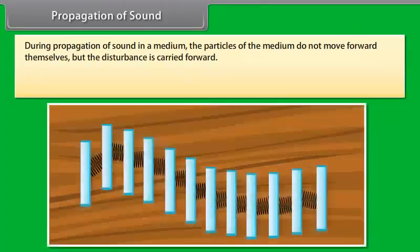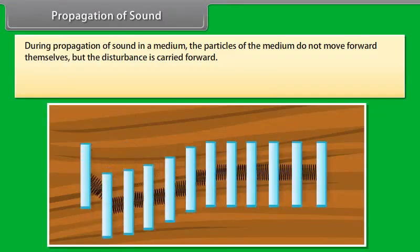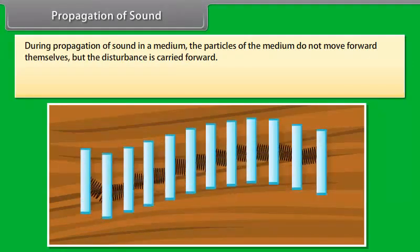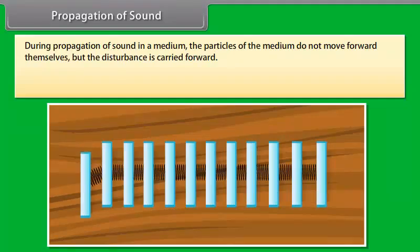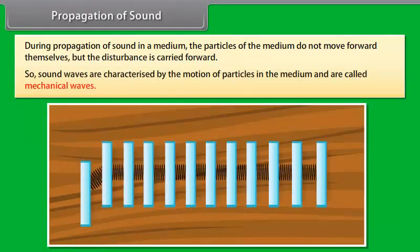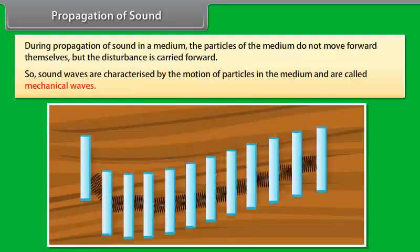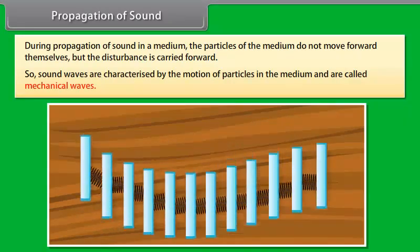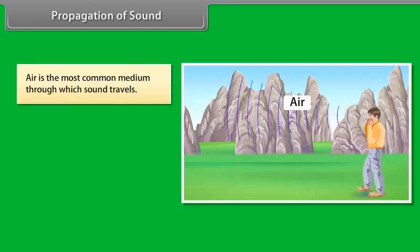During propagation of sound in a medium, the particles of the medium do not move forward themselves, but the disturbance is carried forward. So, sound waves are characterized by the motion of particles in the medium and are called mechanical waves. Can you tell the most common medium of sound? Air is the most common medium through which sound travels.